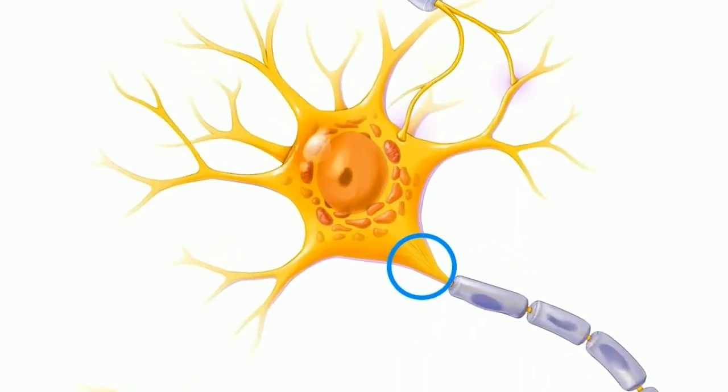Microtubules, some of which we can see circled here, exist within the axons and dendrites and are used by vesicles to transport neurotransmitters to and from the synapses.